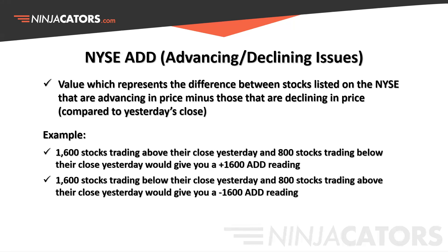The next market internal is the New York Stock Exchange advancing and declining issues — the AD line. It represents the difference between stocks listed on the NYSE that are advancing in price minus those that are declining, compared to yesterday's close. For example, 1,600 stocks trading above their close yesterday and 800 below would give you a plus 1,600 AD reading. That's broad market strength, and the flip side would be broad market weakness.